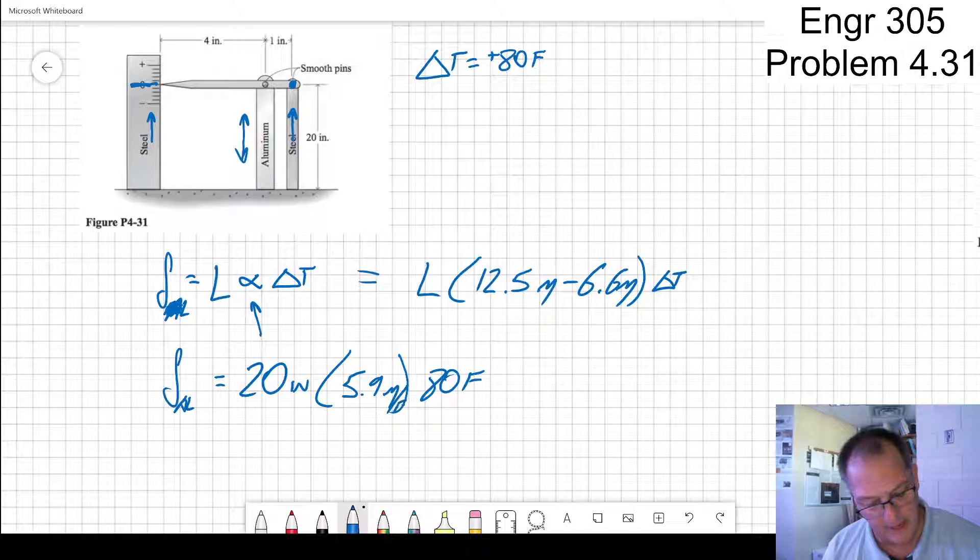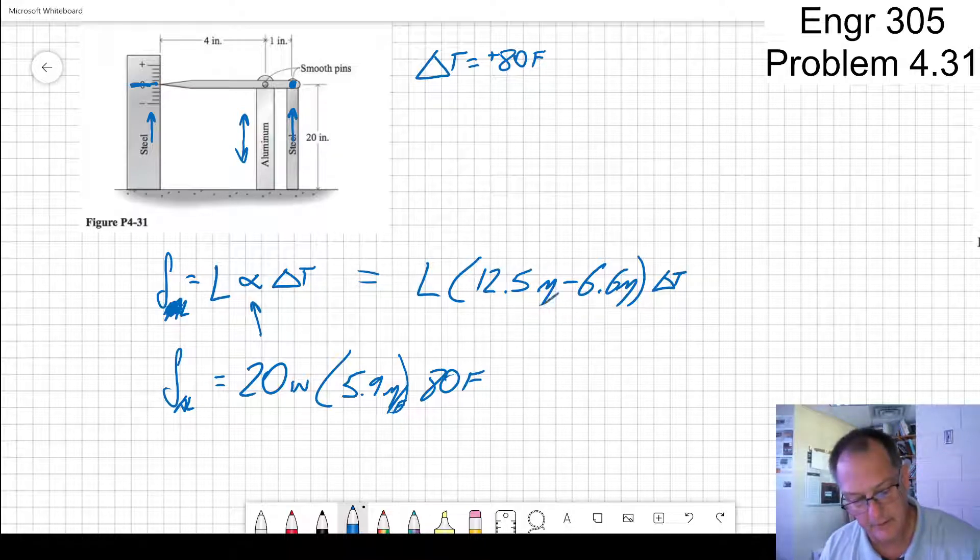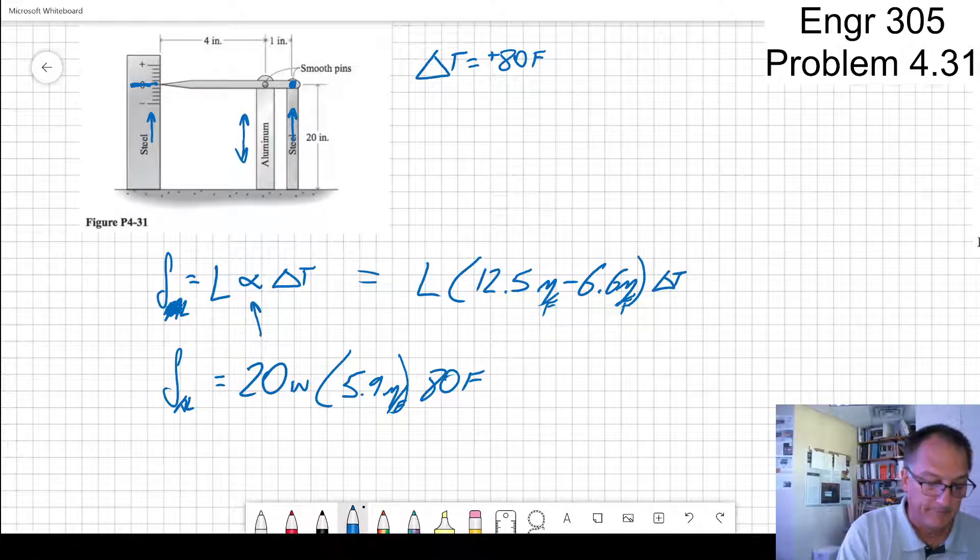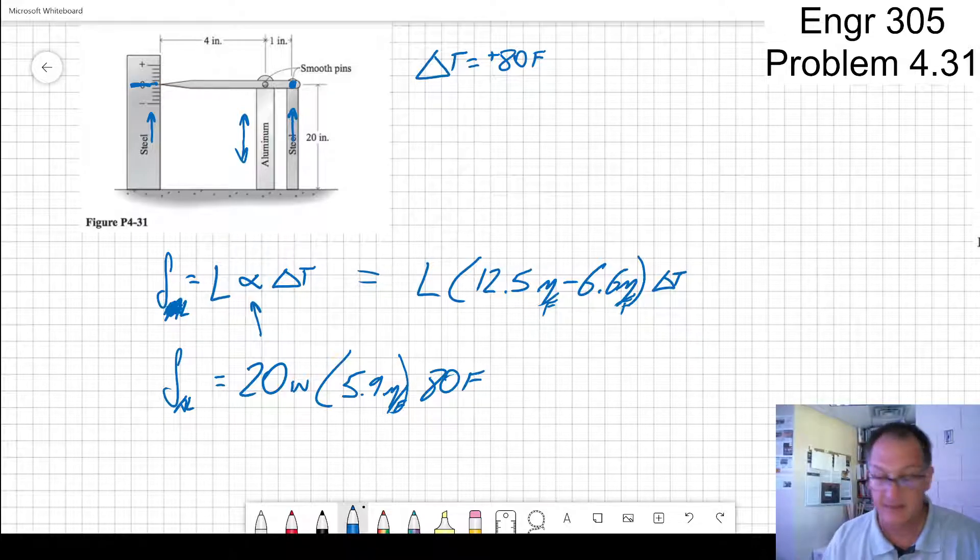Oh, this is micro per F. Per F. I got my units in there. I got my units wrong. So the Fahrenheit's canceled. That's how I knew I had that incorrect.